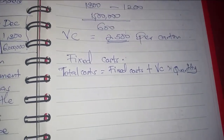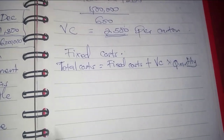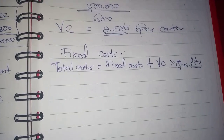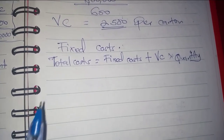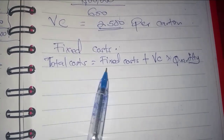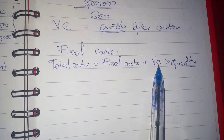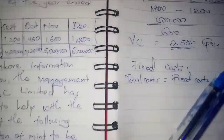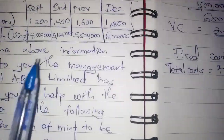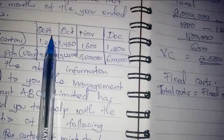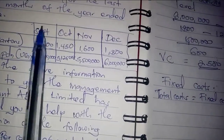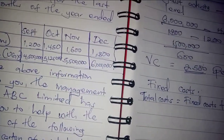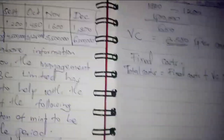So let's calculate fixed costs. The formula we shall use is the formula for total costs: total costs equals fixed costs plus variable costs times quantity. Here in our table, we are going to choose one month — either this or this or this or this one. So we are going to take the first one.